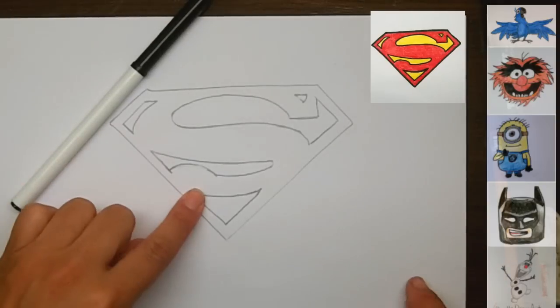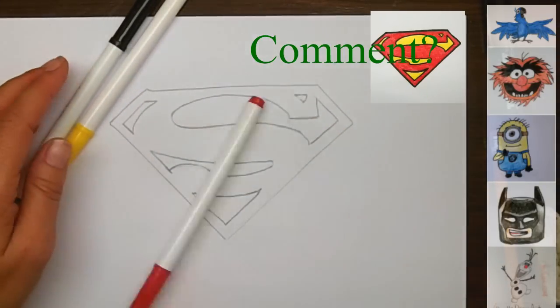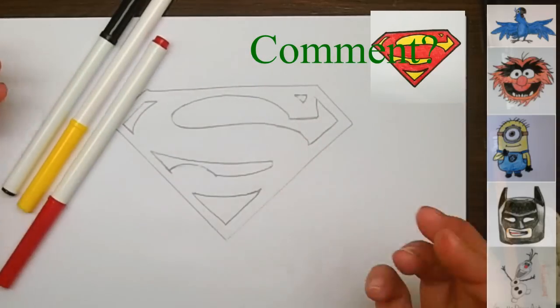So we're going to do black for all the lines that I just drew. We're going to put yellow inside the logo section, and of course red for everything around the edges.